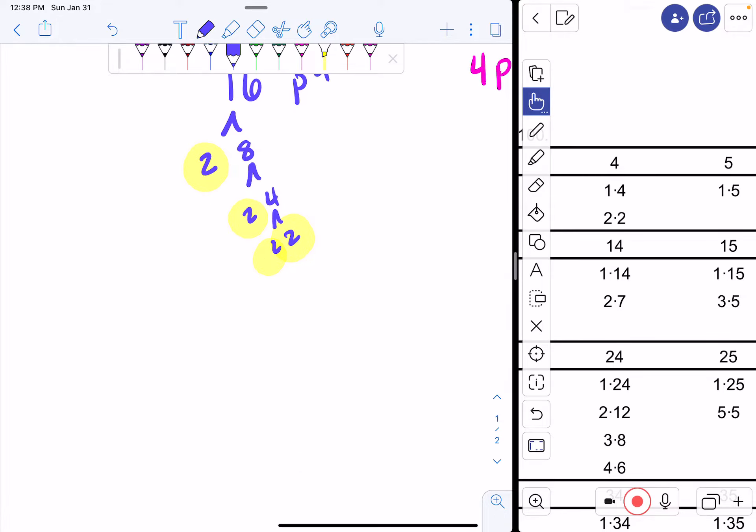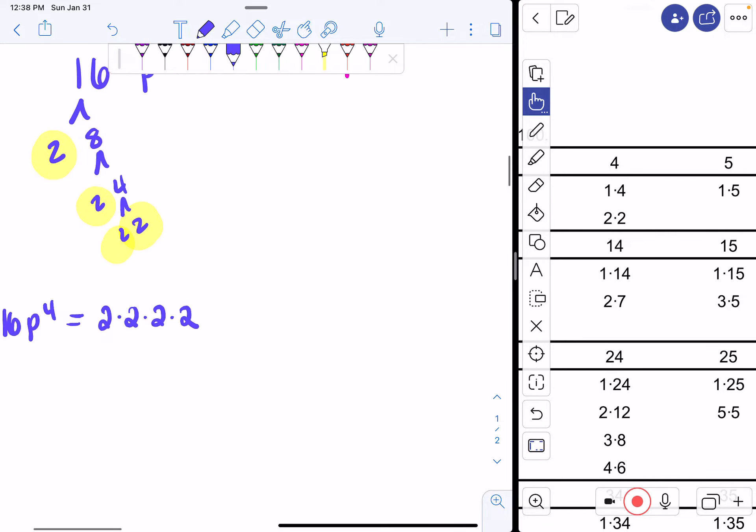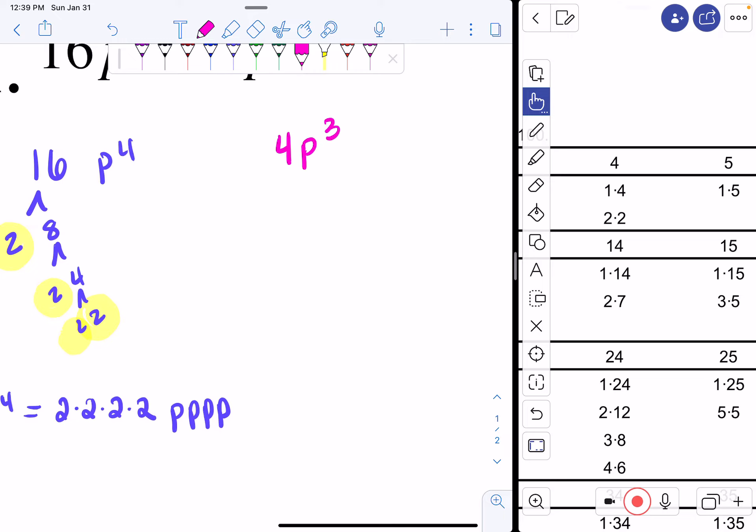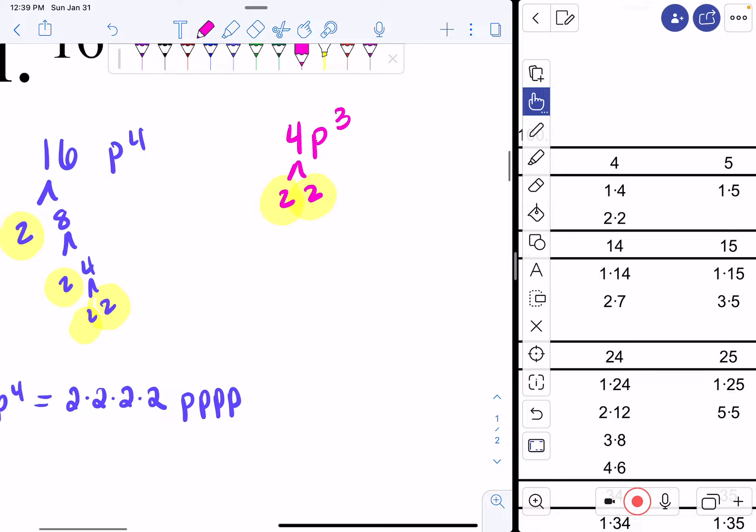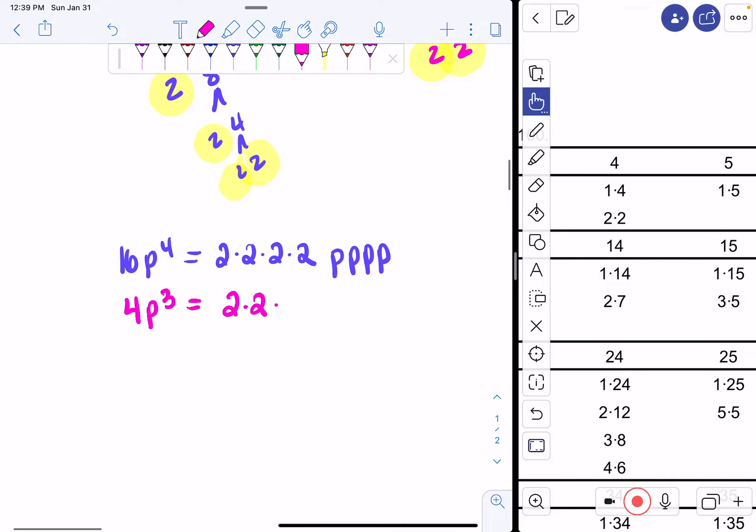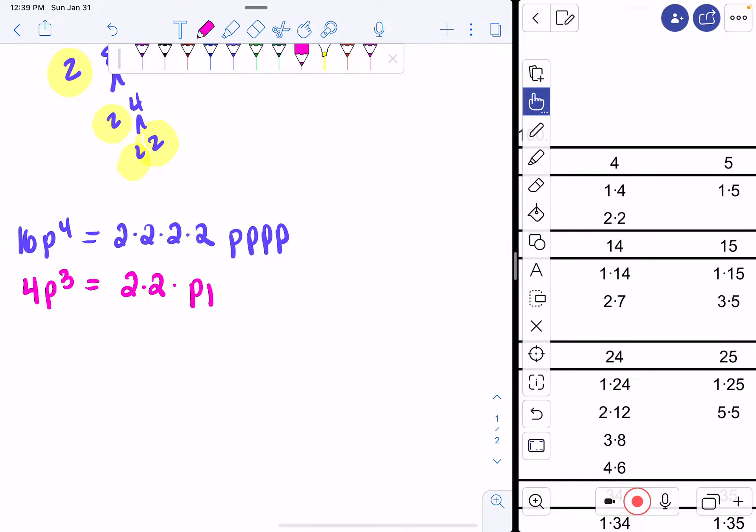So I can say 16p to the fourth is equal to 2 times 2 times 2 times 2, and then I'm going to write 4 p's. Now you should try to break apart 4p cubed by yourself, but here's how I break apart my 4: 2 and 2. And I can't break apart those 2s anymore, so I'm going to highlight them. So I can say 4p cubed is equal to 2 times 2, and then I'll do 3 p's.